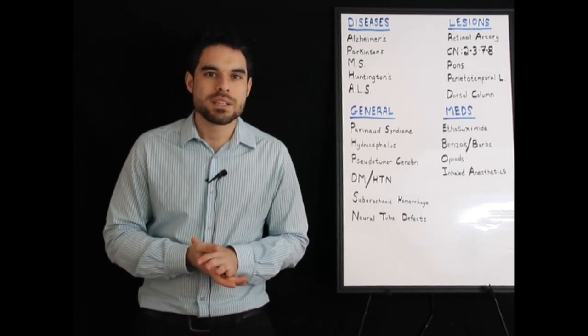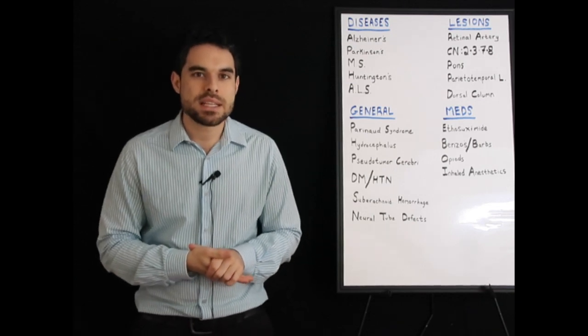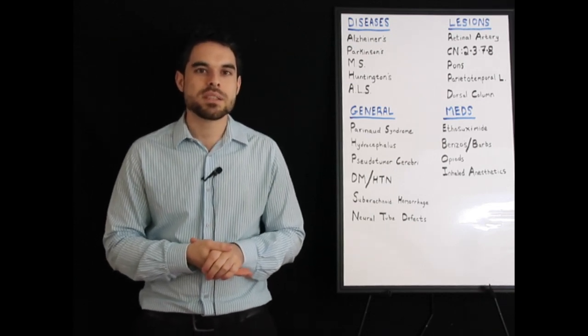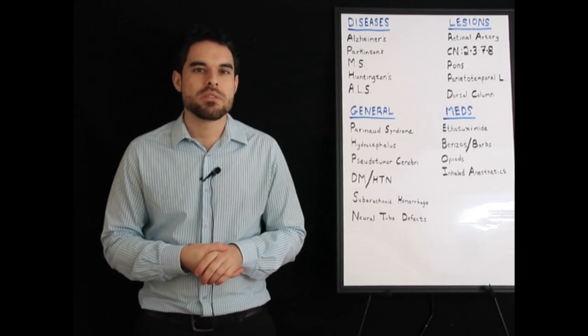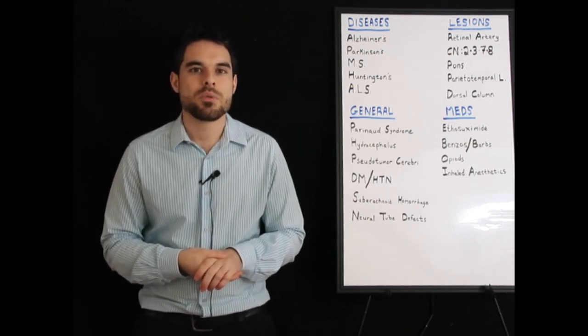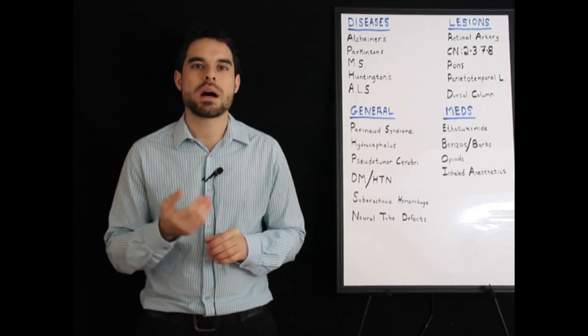Multiple sclerosis is an autoimmune disease affecting oligodendrocytes. You get demyelination of the central nervous system. The internuclear ophthalmoplegia that you can see is because of a lesion to the MLF, which is located in the dorsal pons.